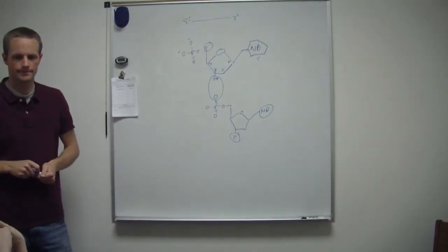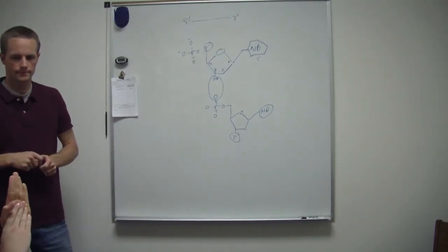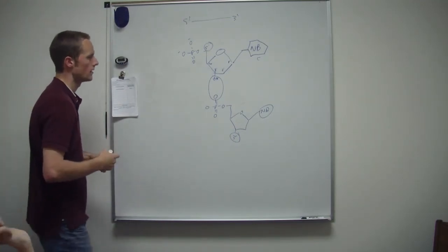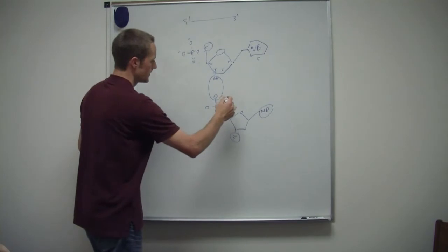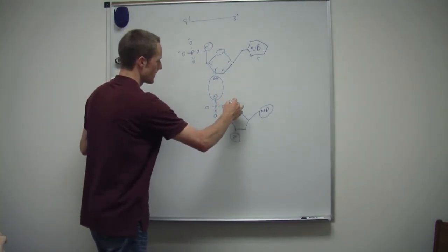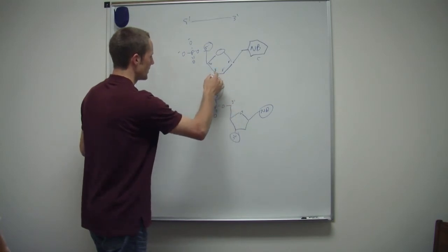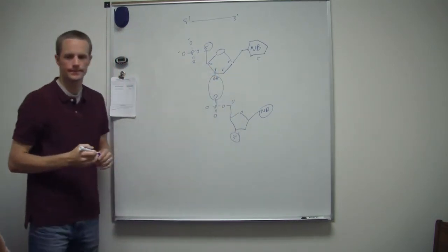So the phosphodiester linkage always occurs on the three prime carbon? Yeah. That's right. Okay. Okay. Yeah. So it's the phosphate on the five prime with the hydroxyl on the three prime. Okay.